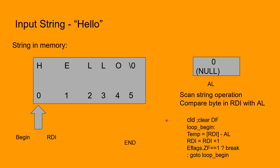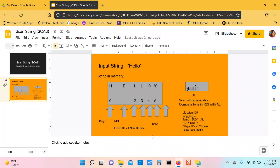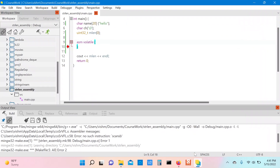Notice that RDI now points to one byte ahead of the null byte. So we decrement the value of RDI by one and then calculate the end pointer. Once we have calculated the end pointer, we can compute the length of the string by subtracting the begin pointer from the end pointer.